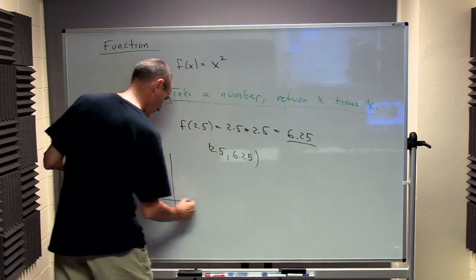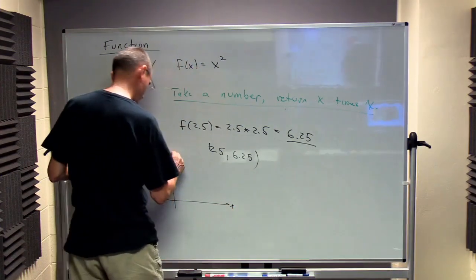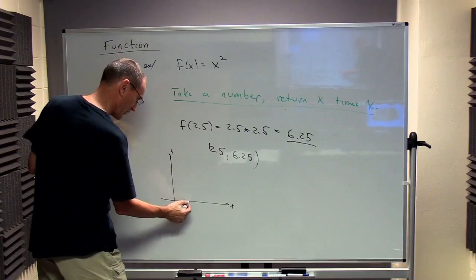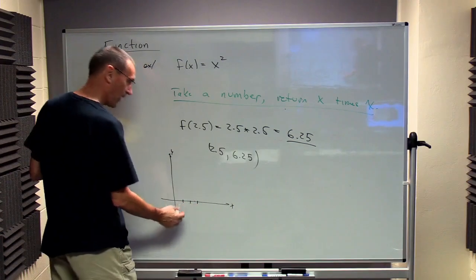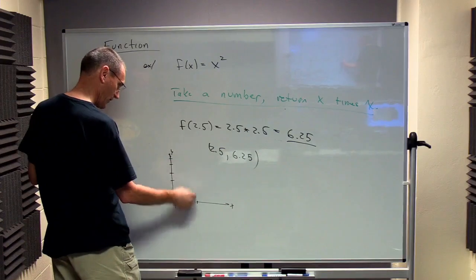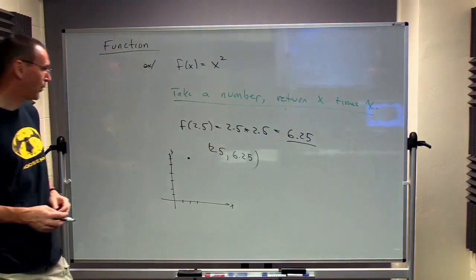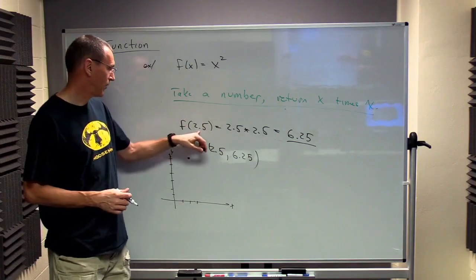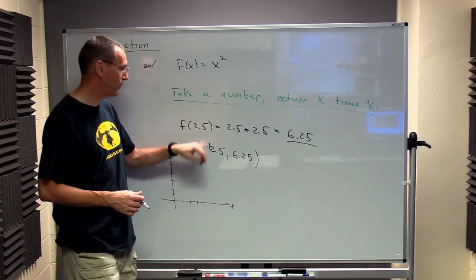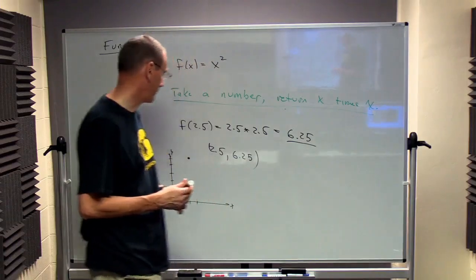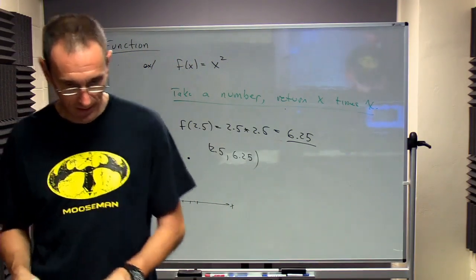So if we were to look at the coordinate plane, we would go to, say, 1, 2, 2.5, and then go up to 6.25. And that's the point associated with this pair, where I input 2.5 and I get out 6.25.